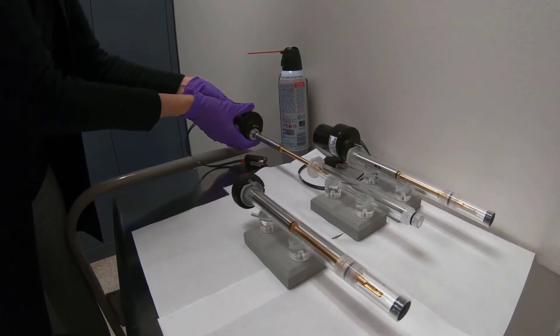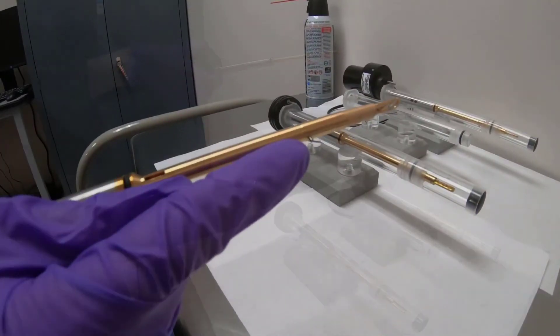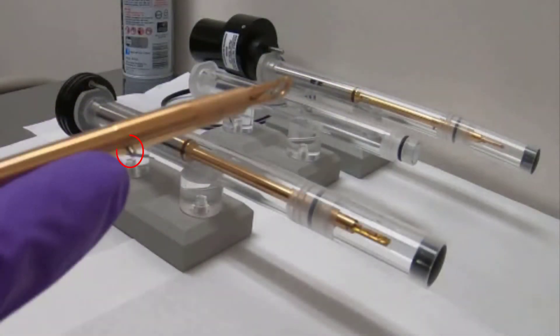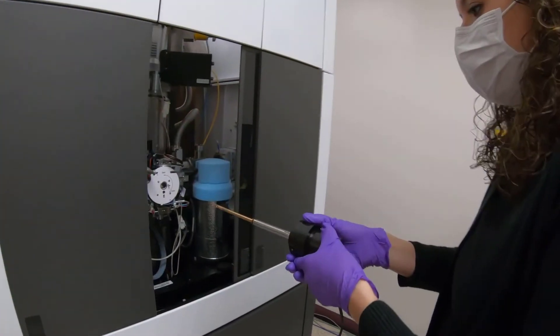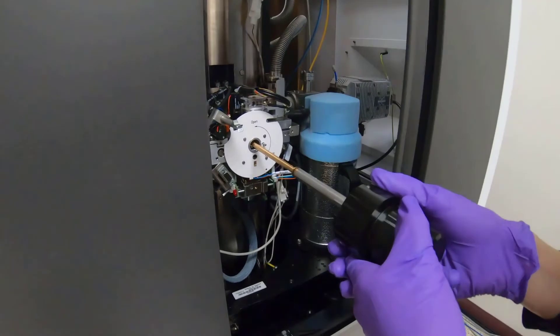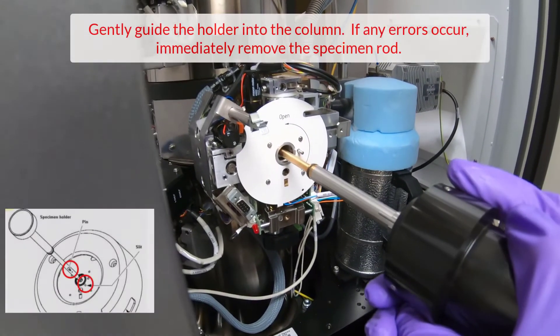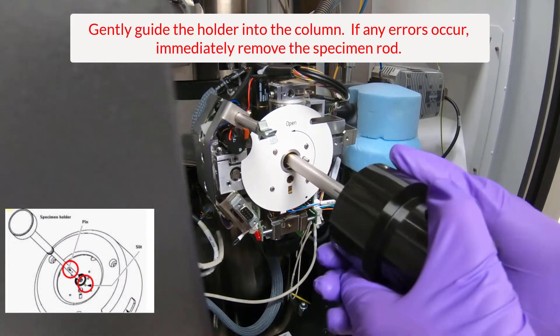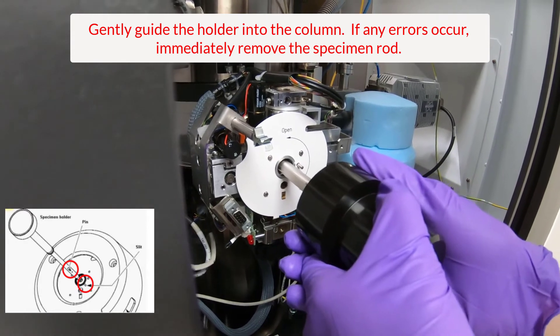Samples should already be loaded into the specimen rod. Visualize the pin on the side of the specimen rod and line it up with the slit in the airlock, which is located at approximately 5 o'clock. Once it is lined up, gently push the holder into the column.